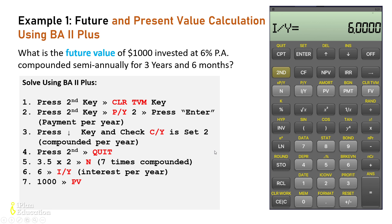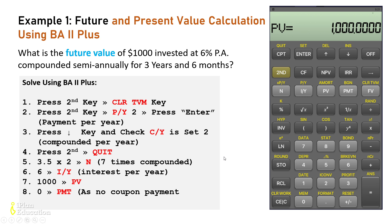Next, enter the present value, which is one thousand dollars. Press 1000 and then the PV button. Now enter the payment amount. Since this is not a bond, there is no payment received during the holding period, so the payment is zero. Press zero and then PMT. If TVM is cleared you don't have to input the payment, but it's good practice to enter zero.